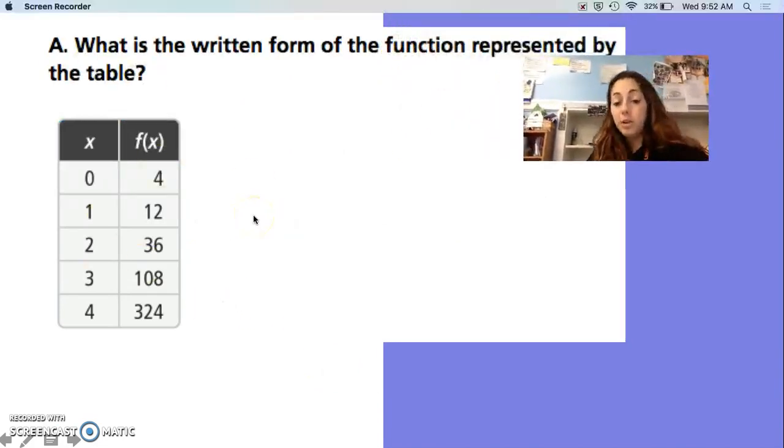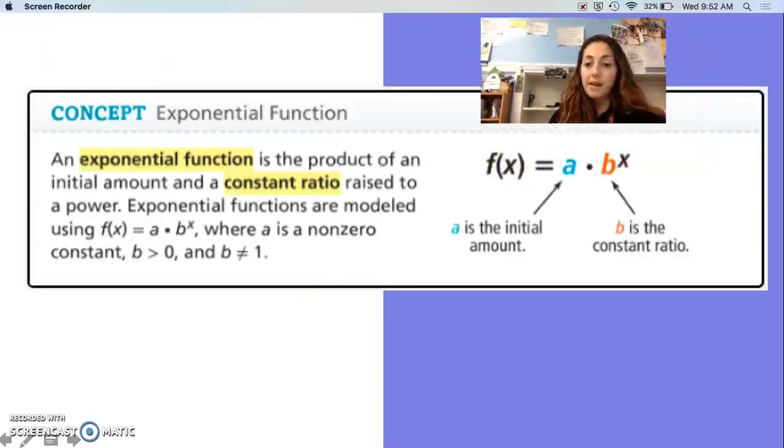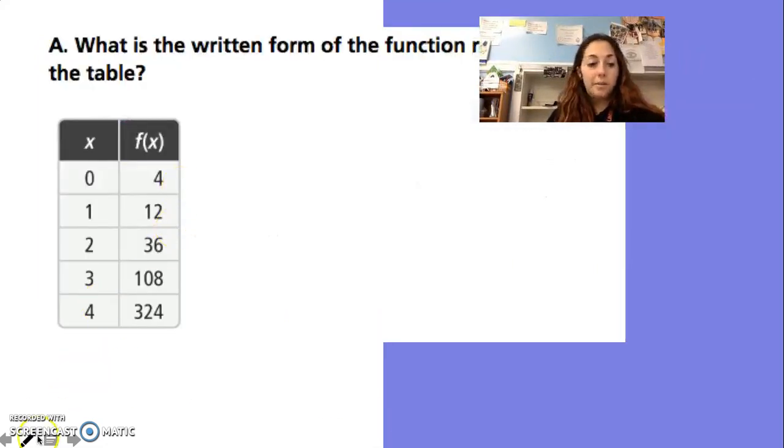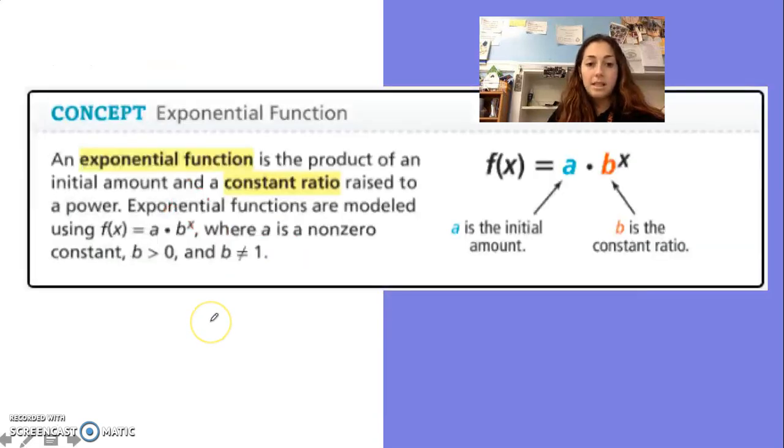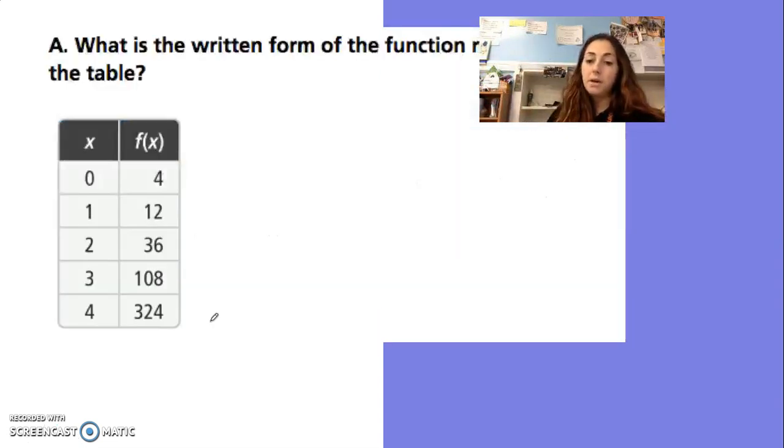We're looking at this table and we're going to turn it into an equation that looks like f(x) equals a times b to the x power. What's happening from the 4 to the 12 to the 36 to the 108 to the 324? I'm sure you've figured it out by now - it's times 3. So that means my b value is 3, that's that constant ratio. The other part is the initial value, which we call the y-intercept. When x is 0, that's your y-intercept. So your initial value is 4.